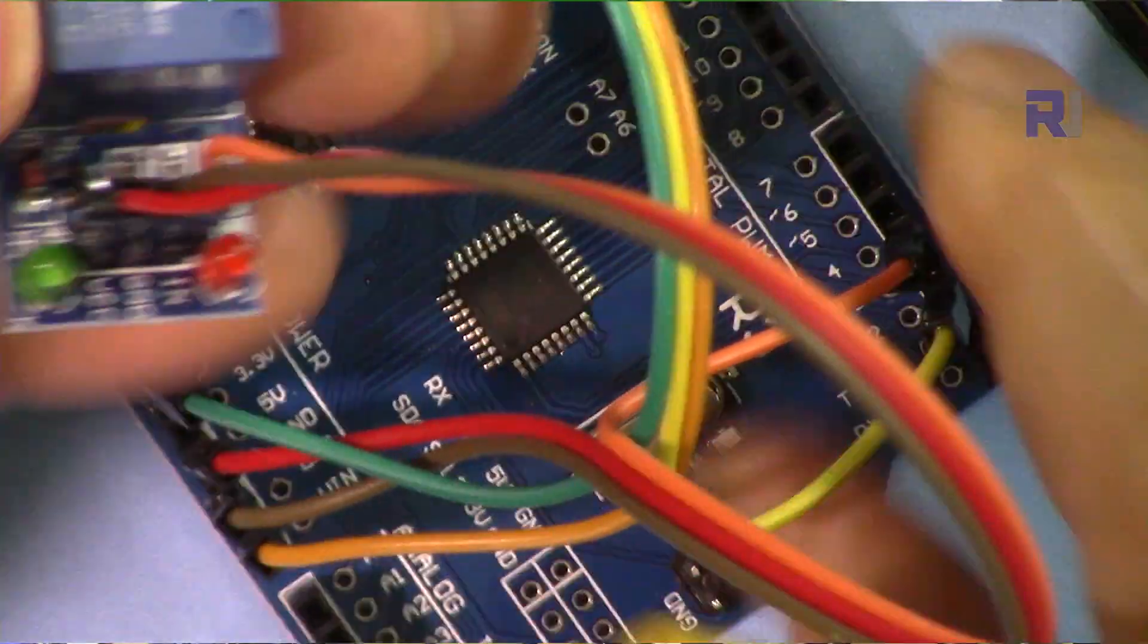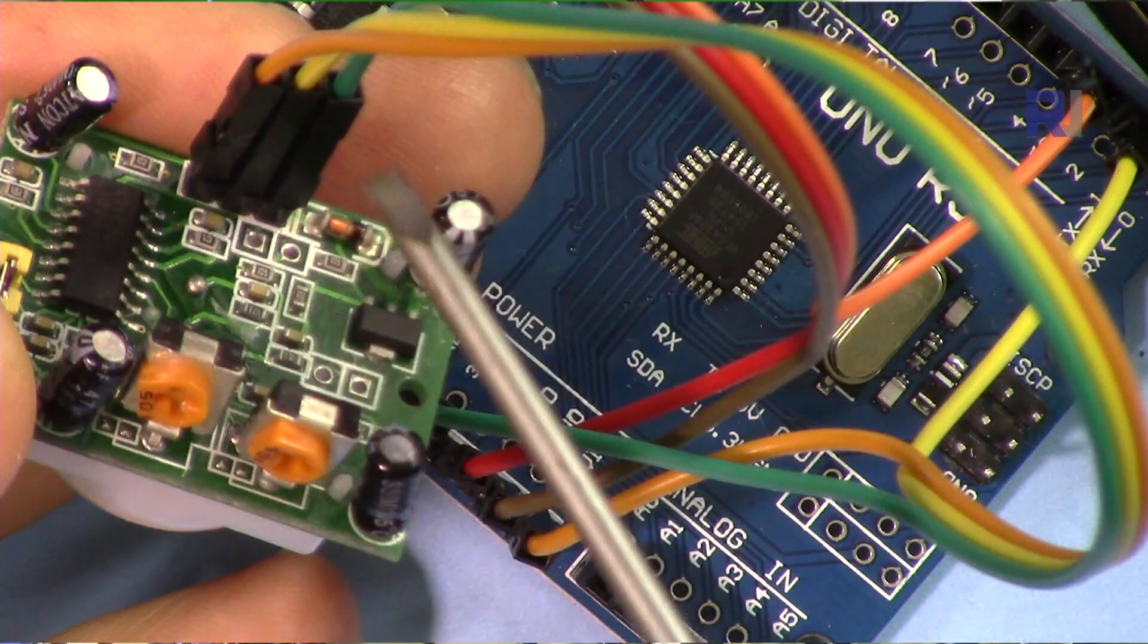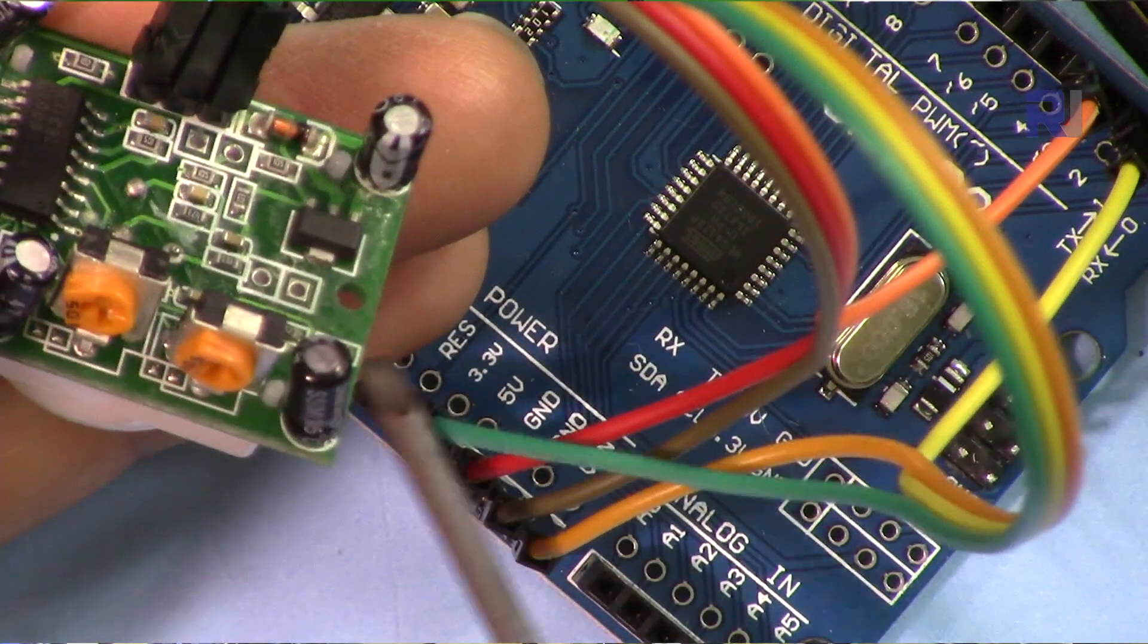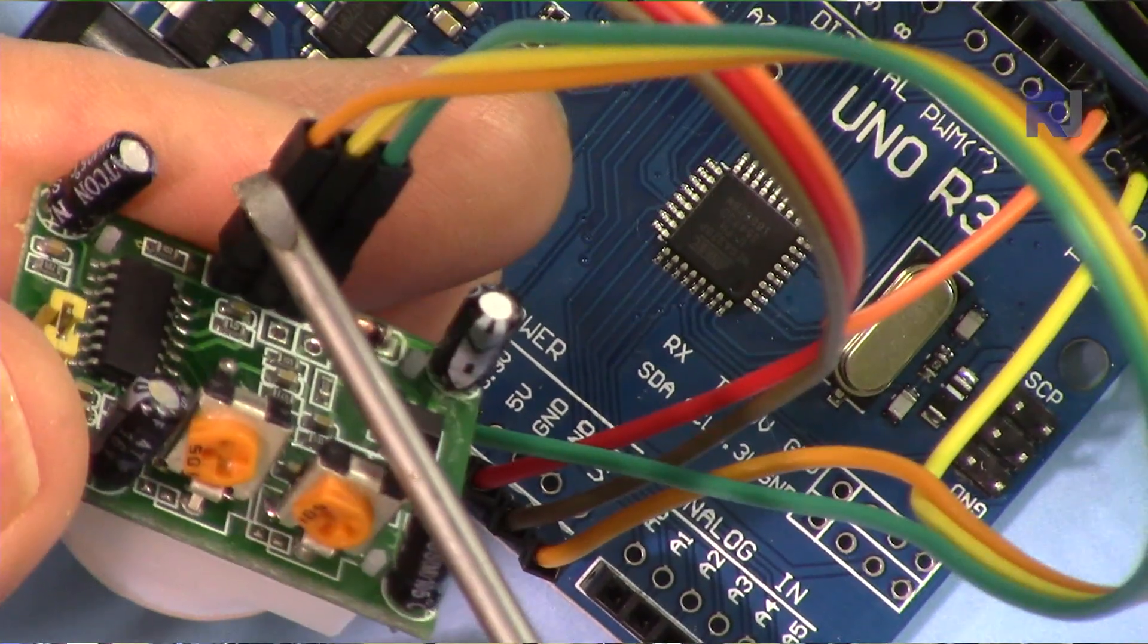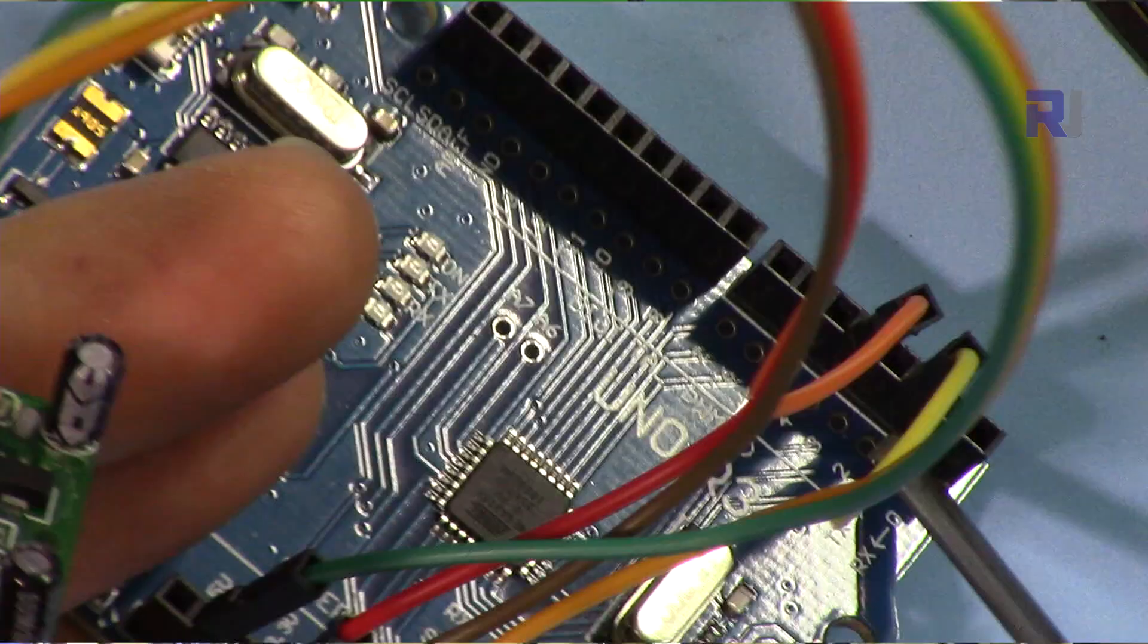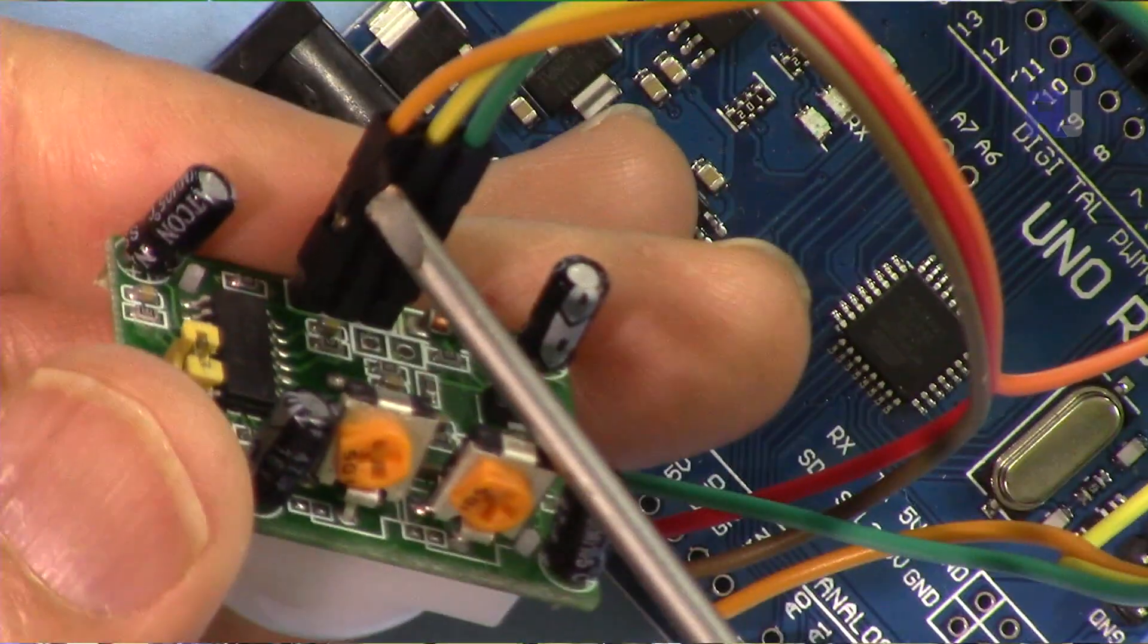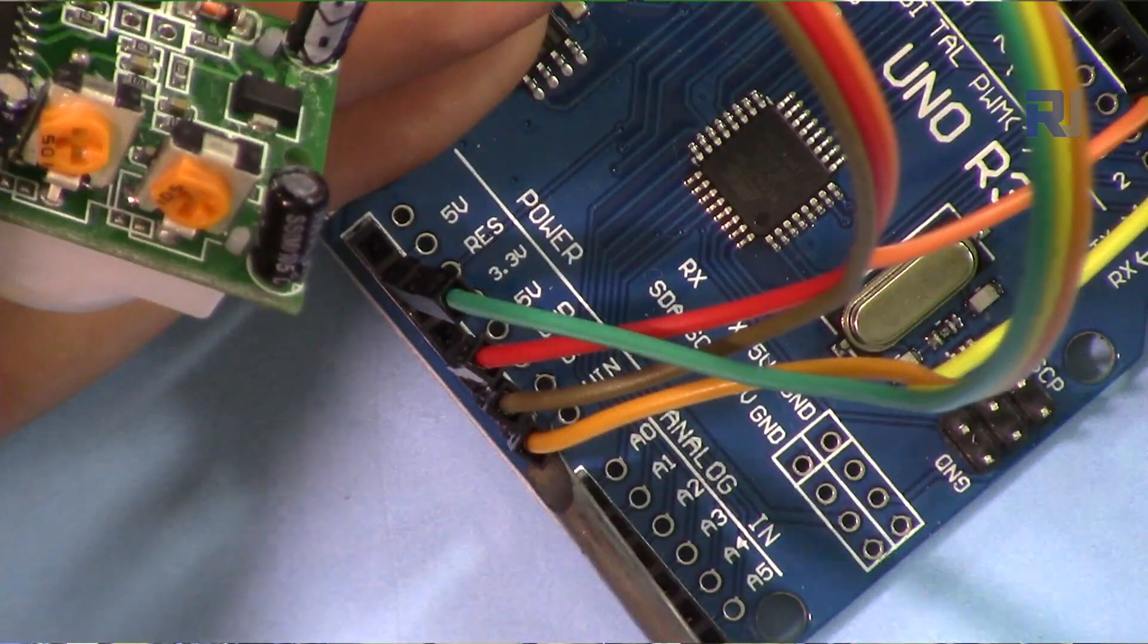And for the motion sensor, from the right, this is VCC connected to 5 volts here in Arduino, and the middle one is the signal connected to pin 2 in Arduino, and this side is ground connected here to the ground of Arduino.